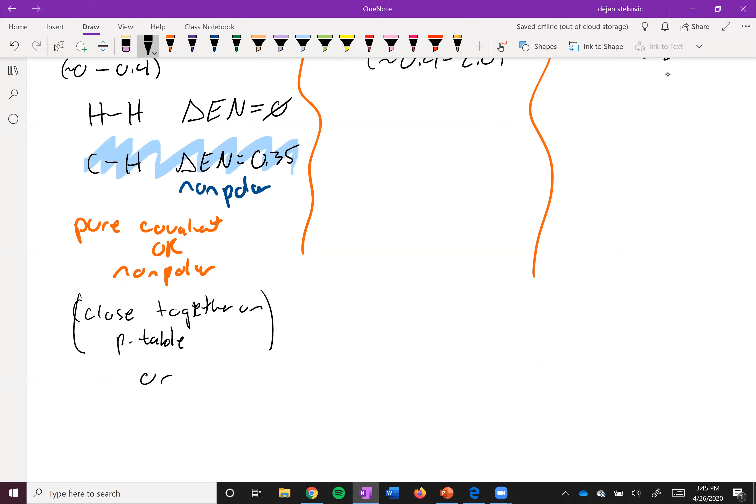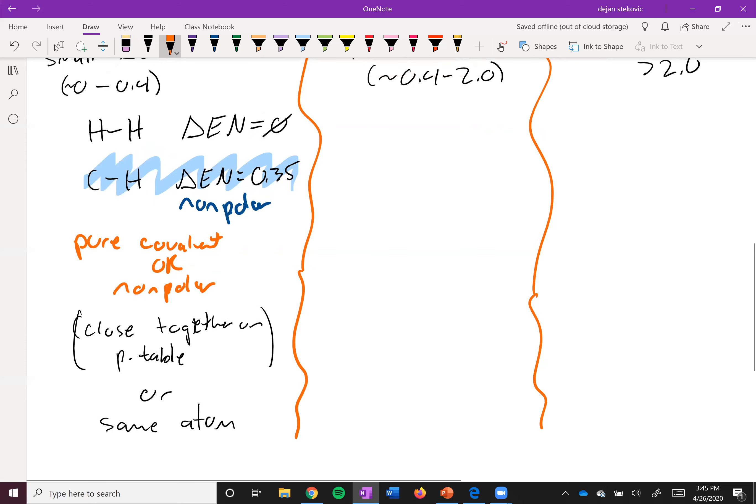So that could be one of the cases, or they could be the same atom, right? If you have the same atom, you're going to have even sharing because they have the same electronegativity. They're pulling on those electrons by the same amount.